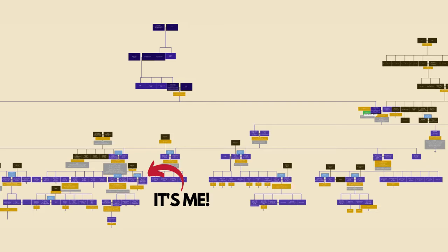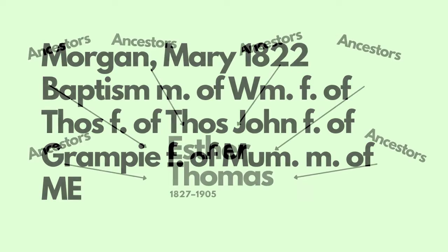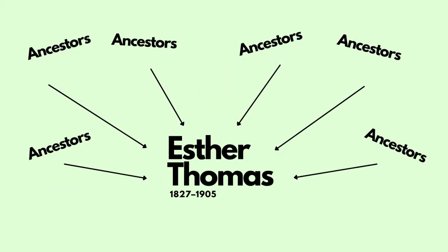If you're just starting out your tree, you can always make the ancestry part of the file point back to yourself. So for me, I might write something like: Morgan, Mary, 1822, baptism, mother of William, father of Thomas, father of Thomas John, father of Grampy, father of mum, mother of me. The other way that I've done it is by pointing back to ancestors that naturally stand out to me. One of those is my four times great grandmother, Esther Thomas. So when I'm doing research for my Thomas tree, I might point myself back to her when saving the files.